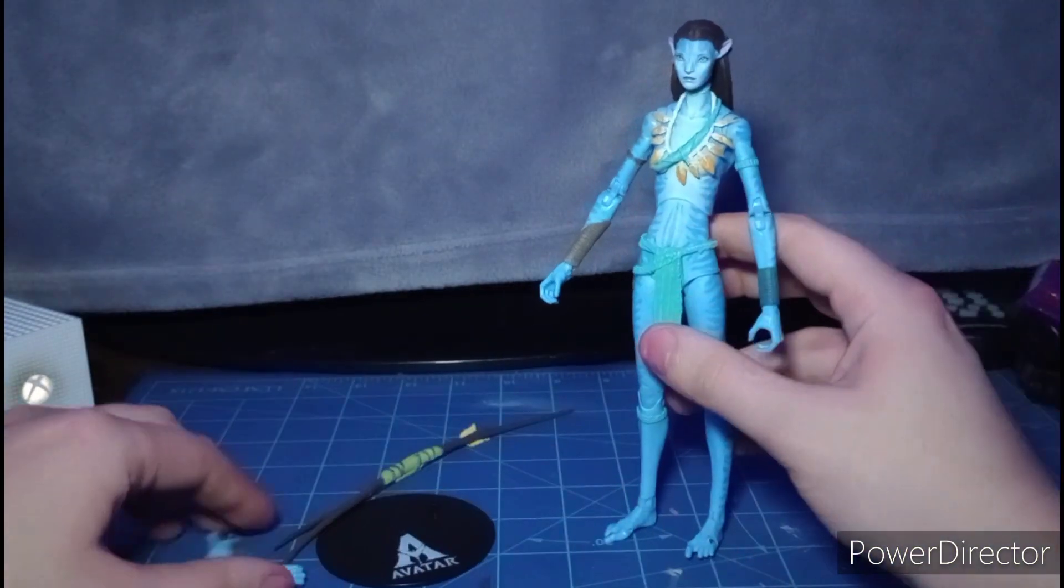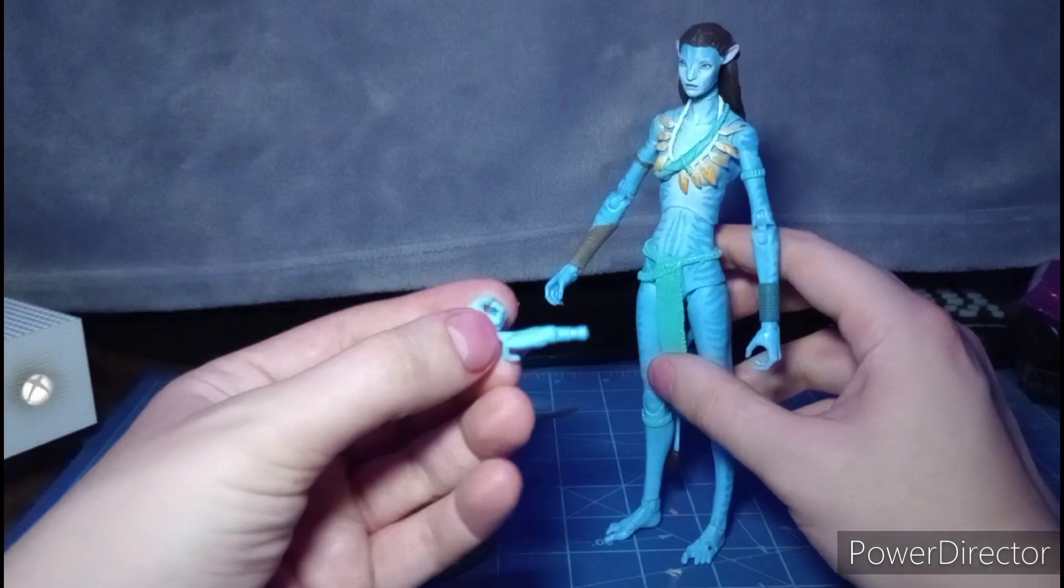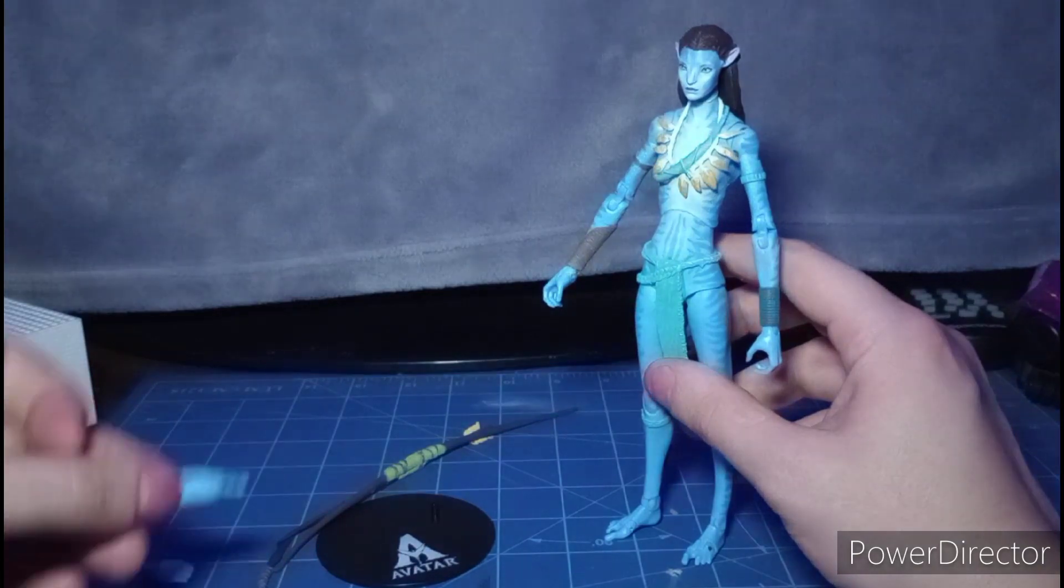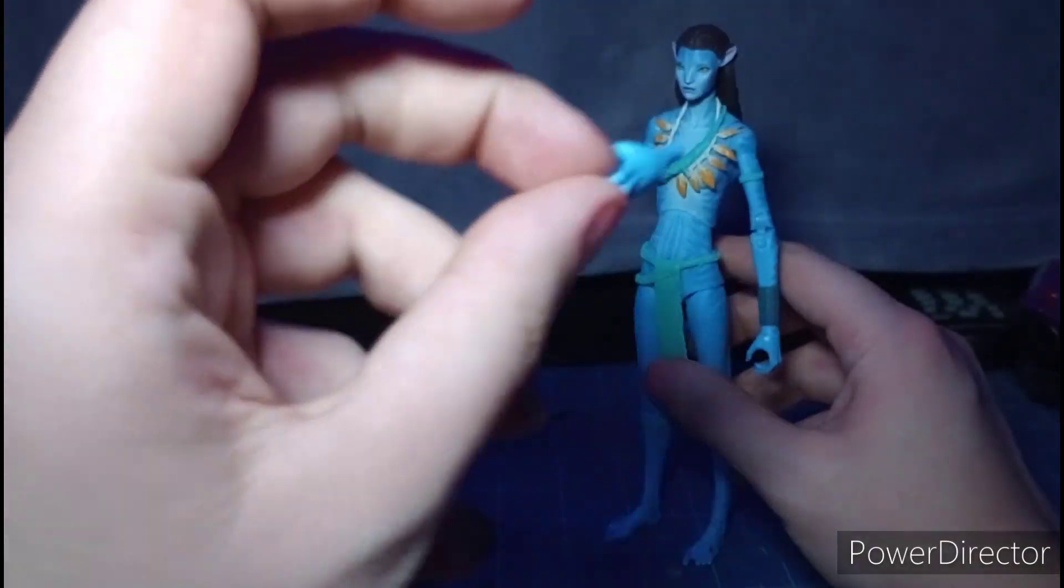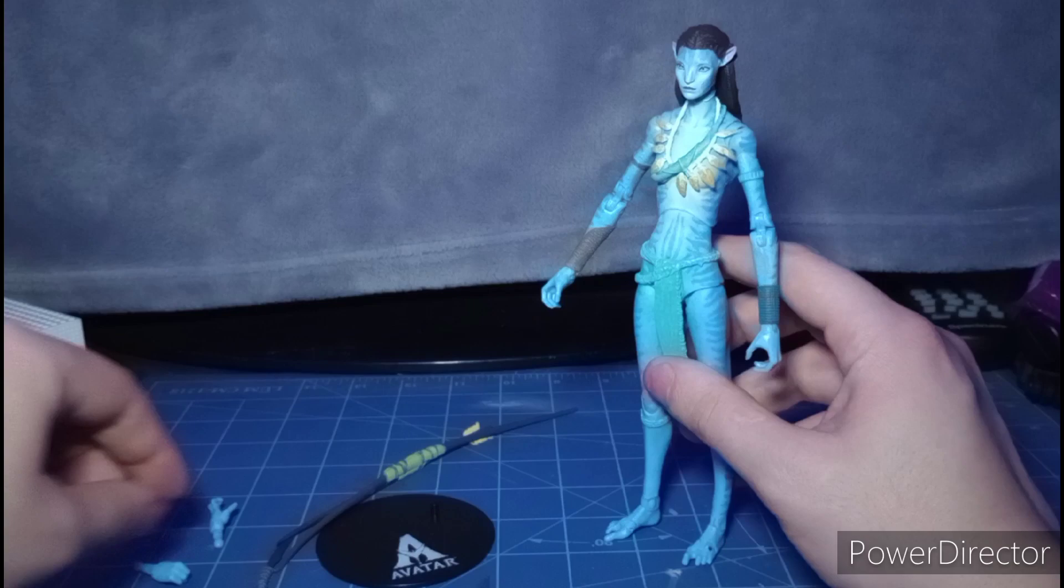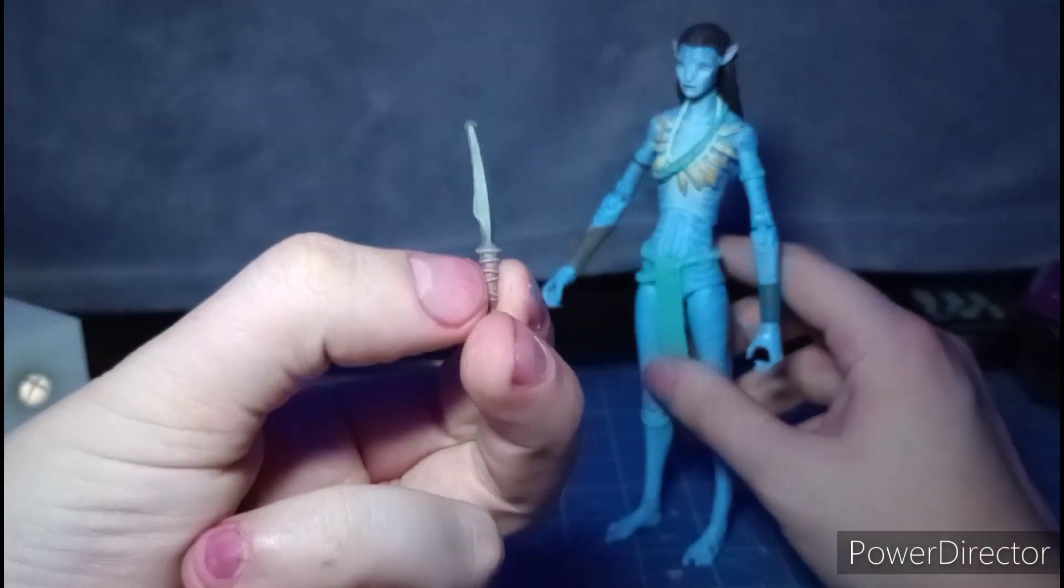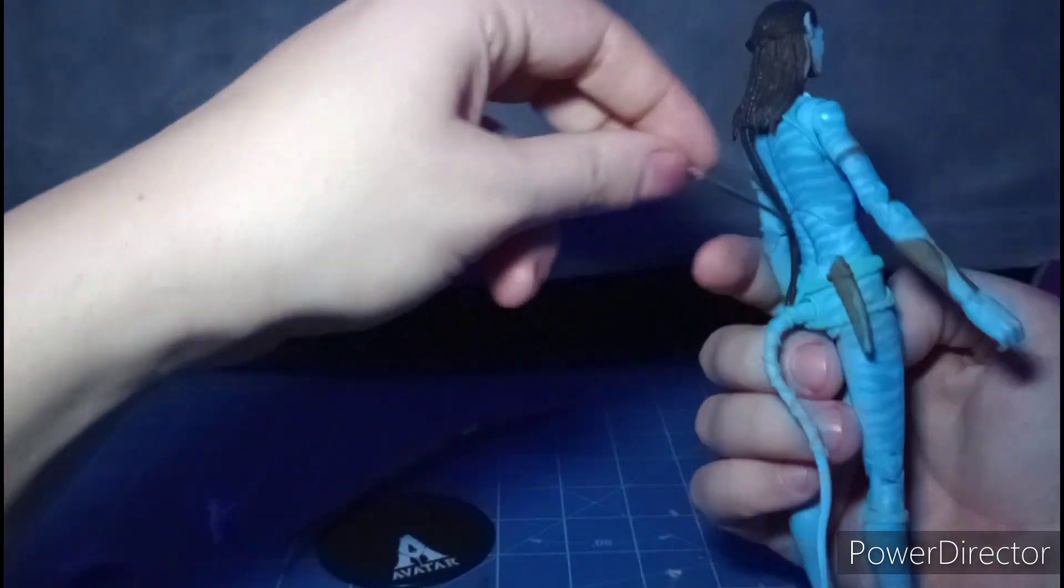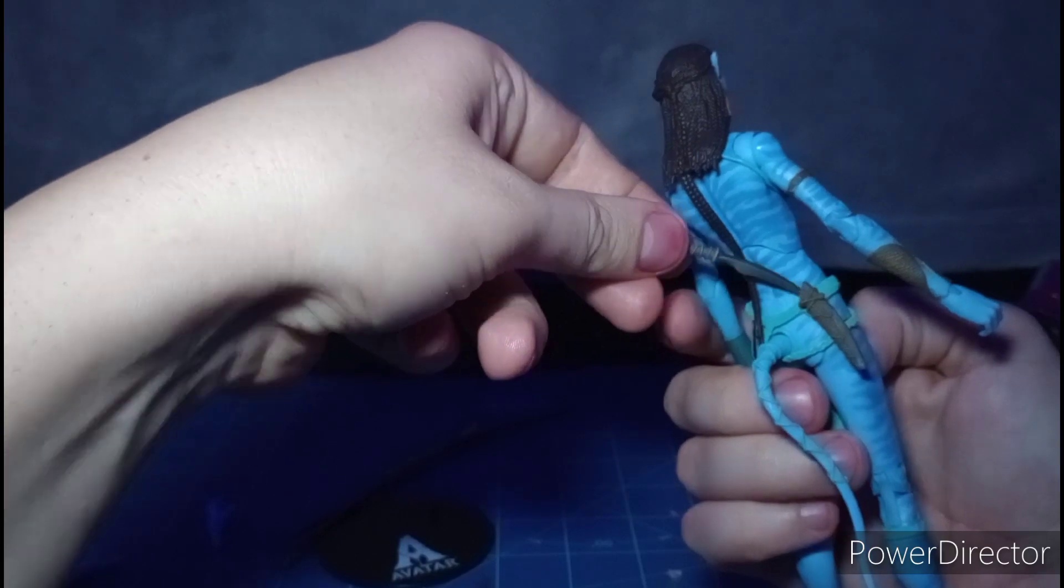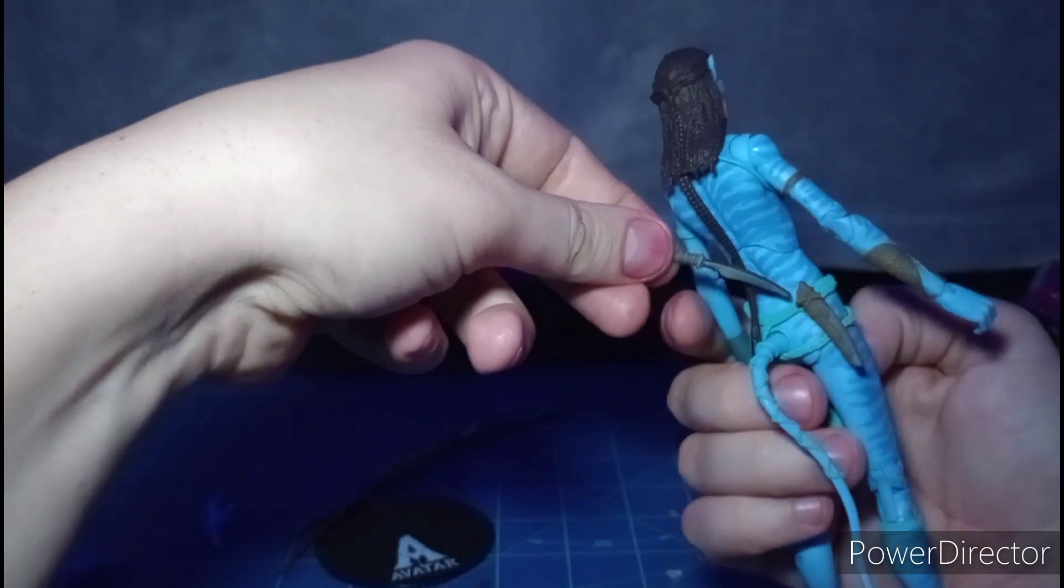Accessories. She comes with these alternative hands she has to hold. This actually looks like a grip because of the molded thumb, and this is her trigger fingers. And of course, her knife, which she can keep right into the sheath. Right in there.